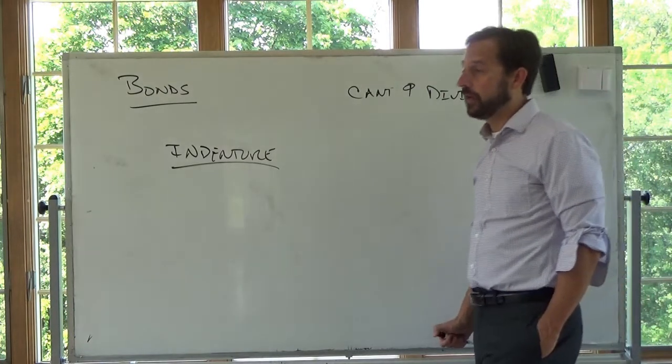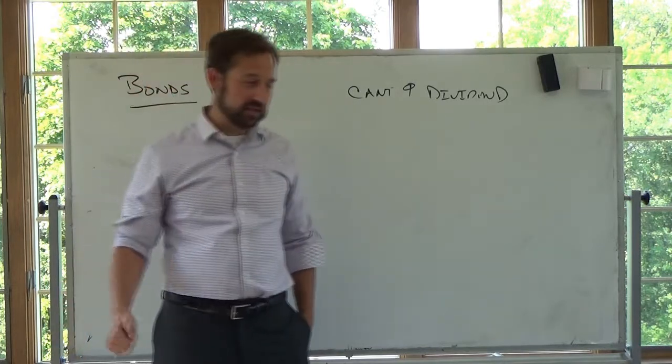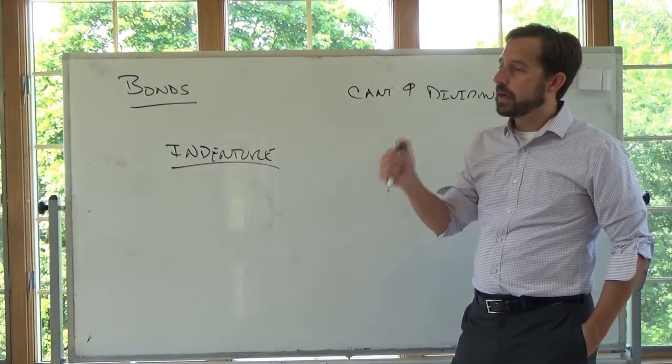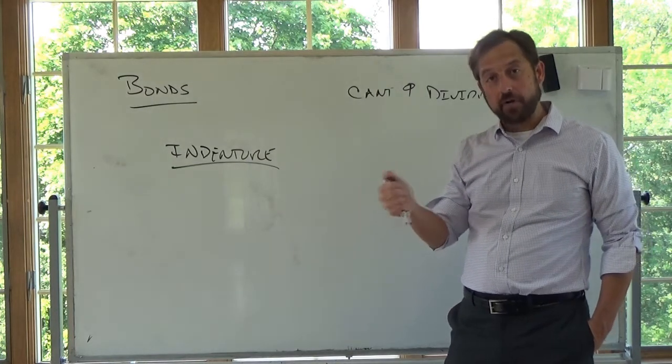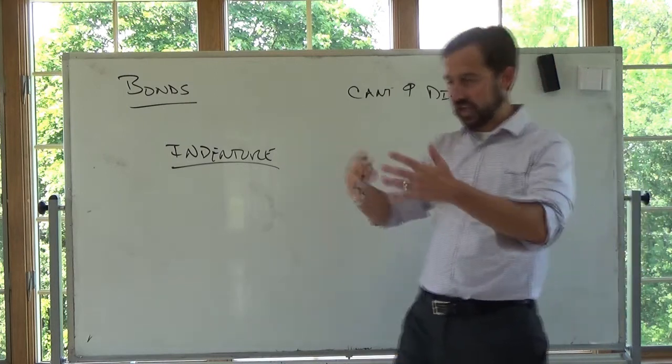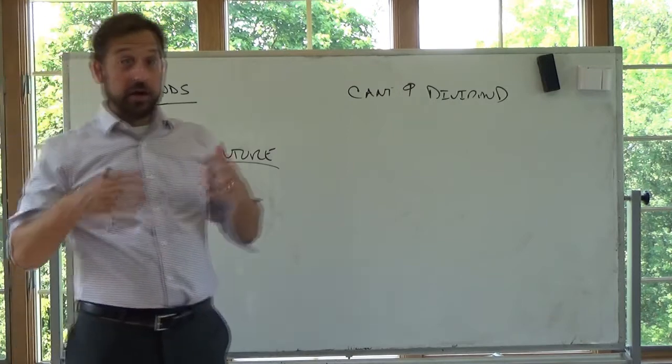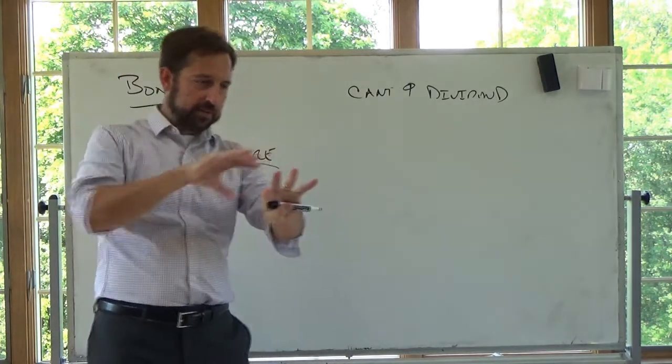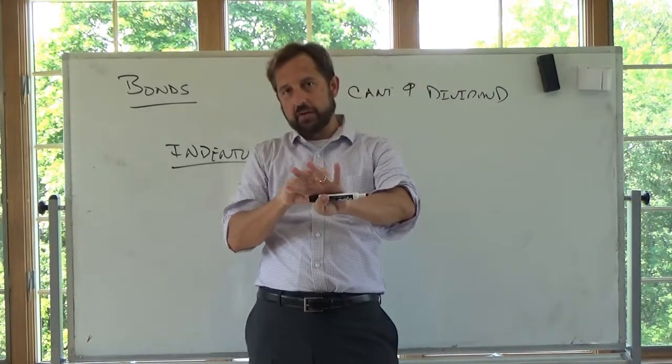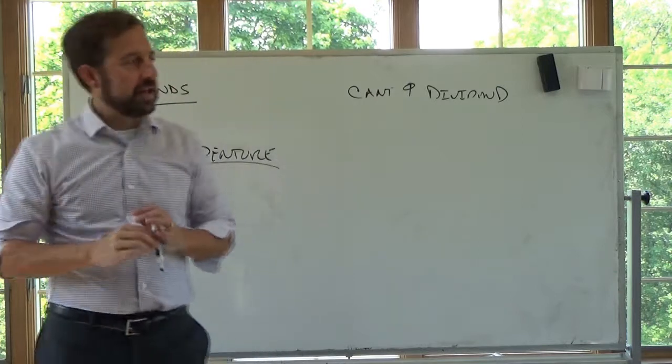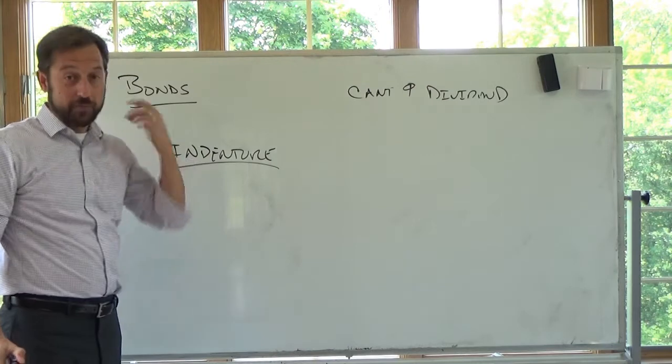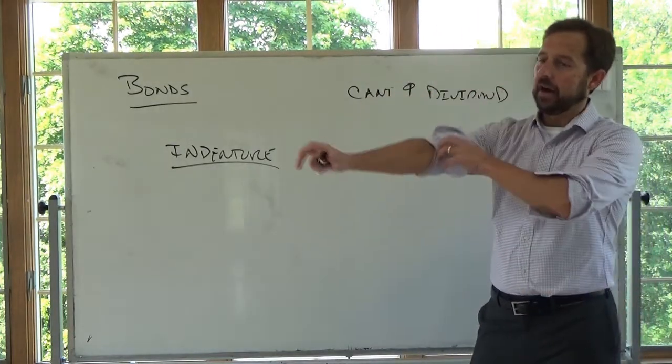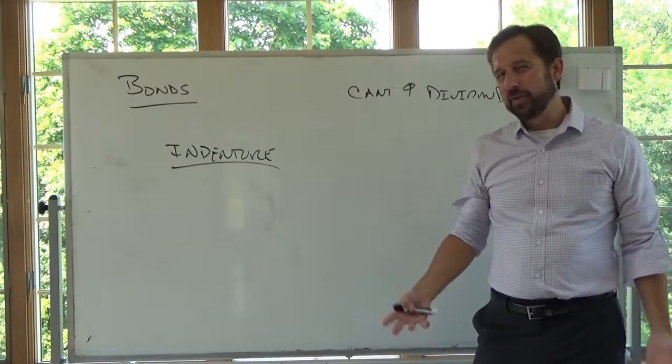Interestingly enough, if any of you want to become what are often termed vulture capitalists, which is not a terrible thing to do, if the firm violates that part, that protective covenant, you can ask for all of your money back. So in other words, let's say $100 million in bonds are outstanding, they don't file audited financial statements in a timely manner, you can say, well, give me my $100 million back.